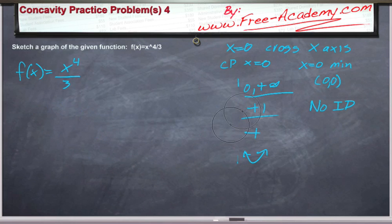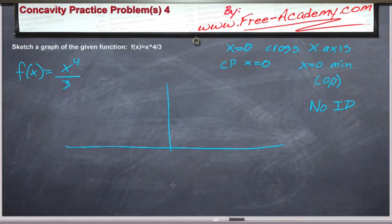Alright, now let's take all this information we have and sketch the graph. We cross the x-axis at only one point, x equals 0, which also happens to be a minimum. We are decreasing before that, we are increasing after that.